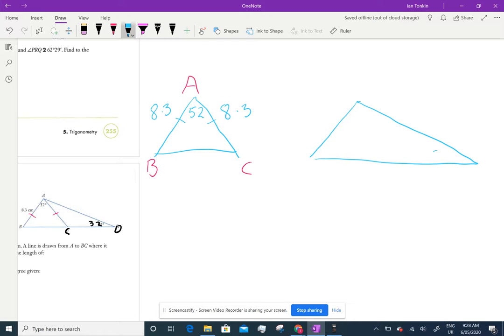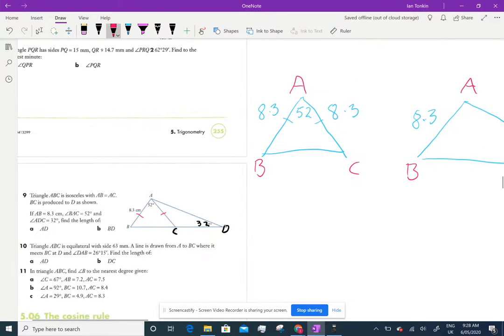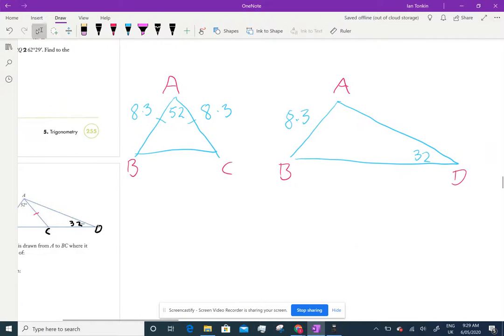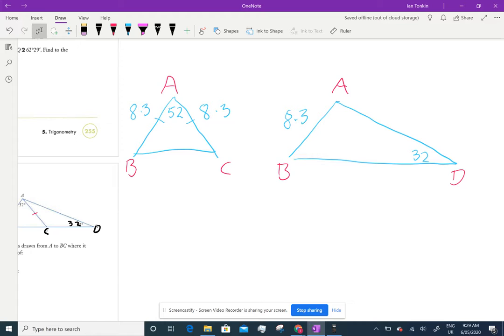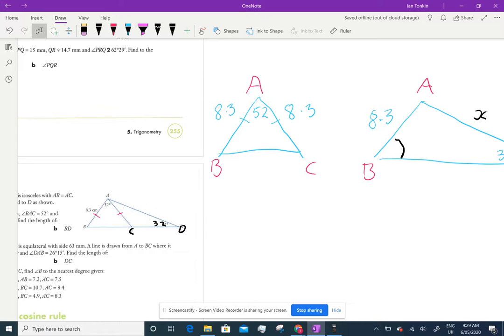Now draw the other one. That's 32 degrees, that's 8.3, this is A, B, and D, and they want us to find AD. To find AD I haven't got enough information. I need this angle because they're the same angle.